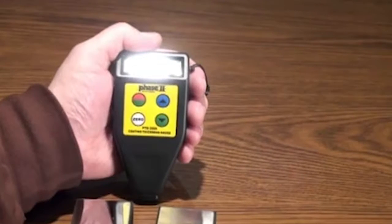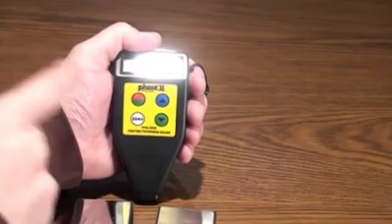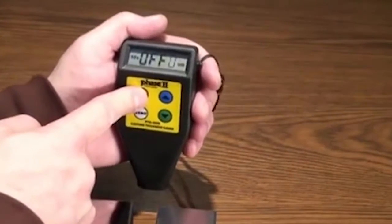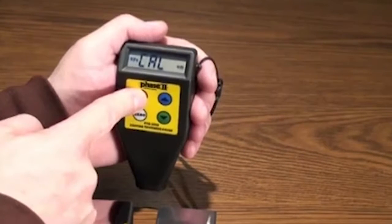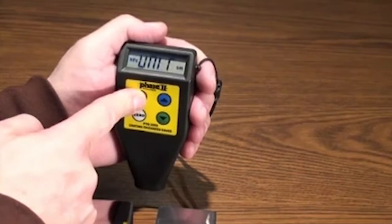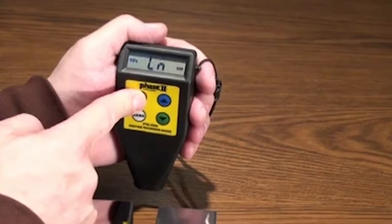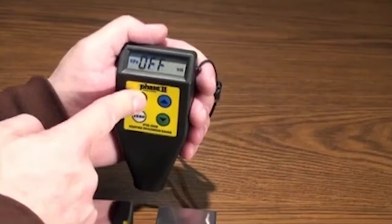The power key also acts as a menu key. If you hold down the menu key for a few seconds, you will see the screen change first to OFF, then CAL, then UNIT, then SC, then LN, and finally back to OFF.